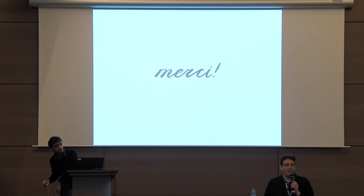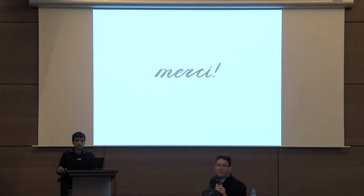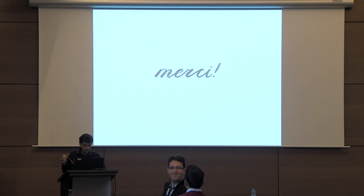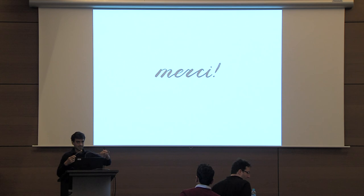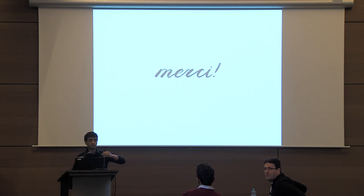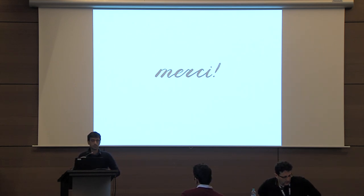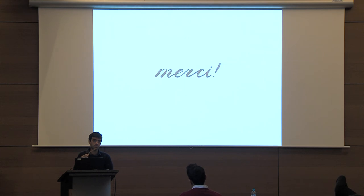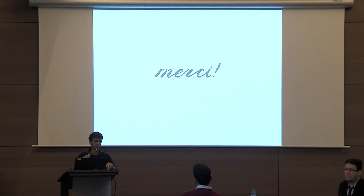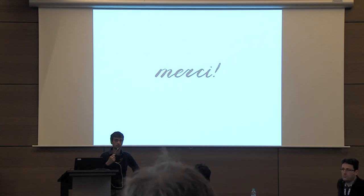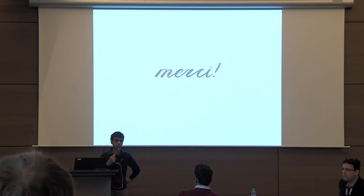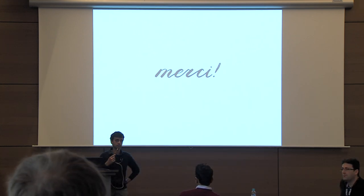Any questions? When you say IO from degree-5 multilinear maps, what assumption do you need? In our work we have a generic model proof essentially—it's not based on succinct assumptions. And the improvement of Rachel, does it need joint SXDH? Yes, joint SXDH.